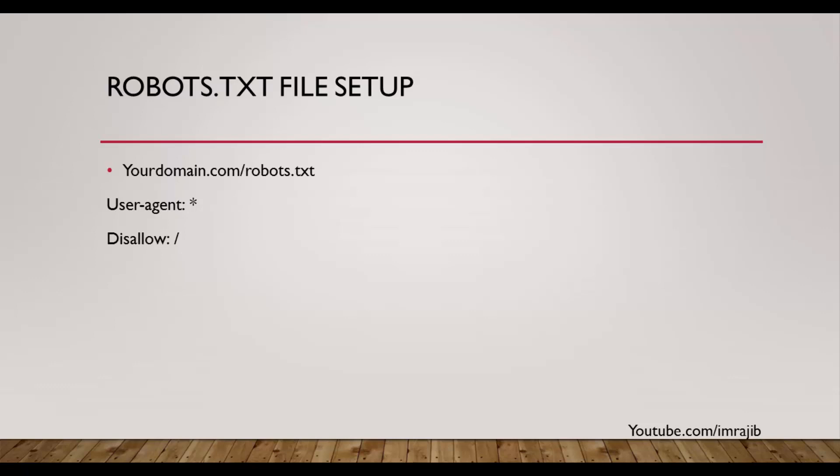This is the robots.txt file and the search engine configuration. The robots.txt file uses the user agent star mark with a disallow directive. We will also use the meta robots tag in addition to the robots.txt file. This is the meta robots tag setup as well.